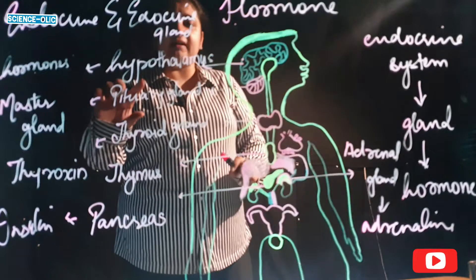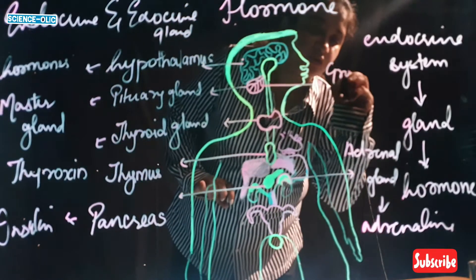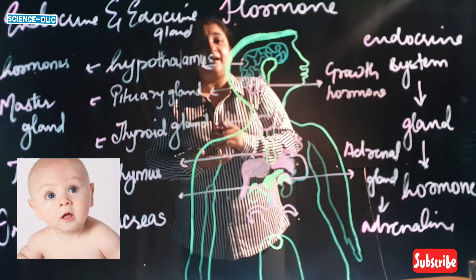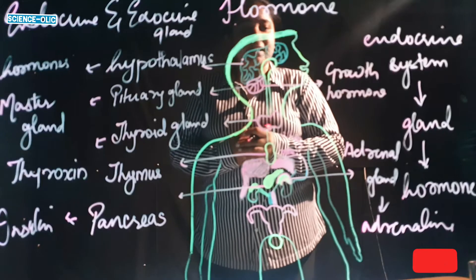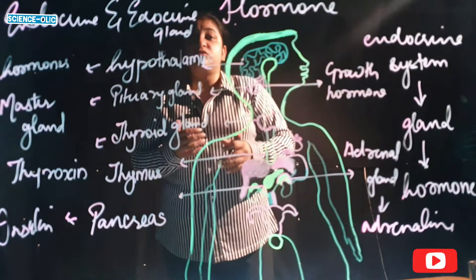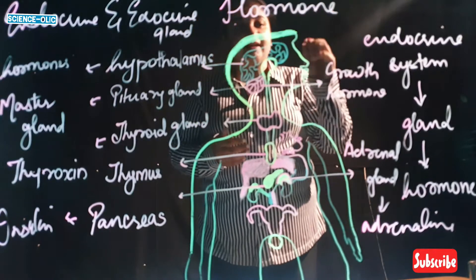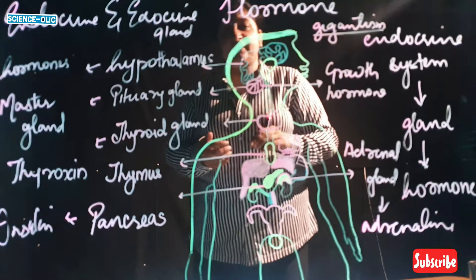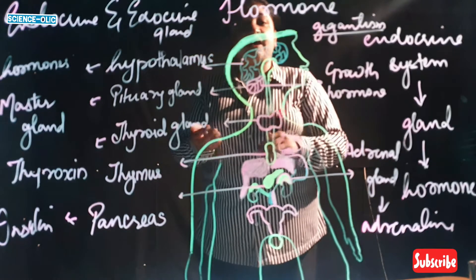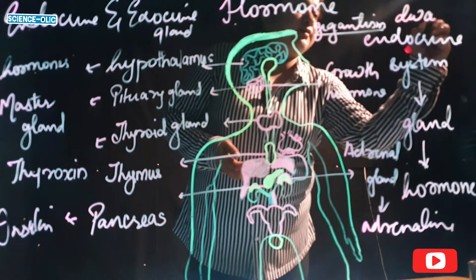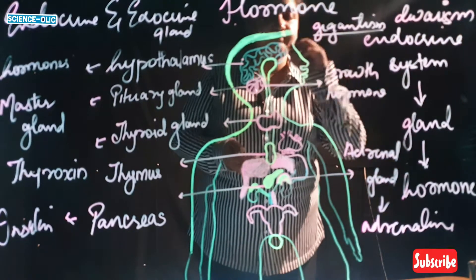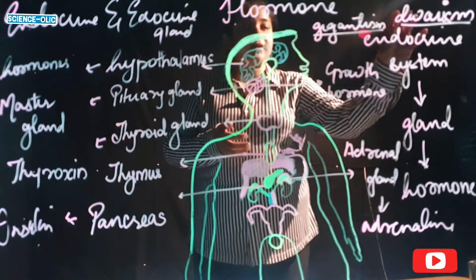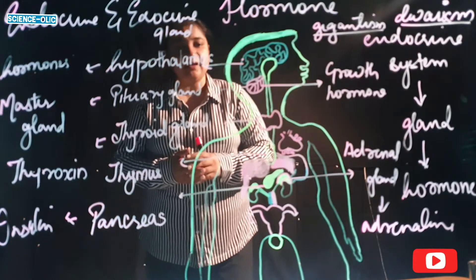The pituitary gland also produces growth hormones, which help you grow from a baby to a tall adult. If a person grows to seven or eight feet or more, their height is not properly controlled — this is known as gigantism, like Khali. If a person is very small for their age and their height does not grow, that is known as dwarfism.